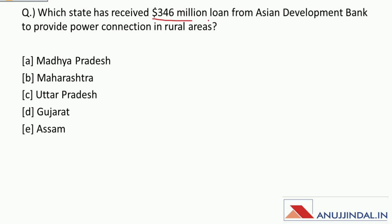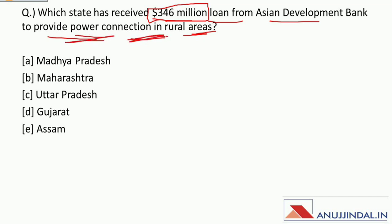Which state has received a $346 million loan from the Asian Development Bank to provide power connections in rural areas? Loans are very frequently asked in exams — you should know the amount, who gave it, who received it, and for what purpose. This loan of $346 million from the Asian Development Bank was given to Maharashtra to provide power connections in rural areas. The Chief Minister of Maharashtra is Uddhav Thackeray of Shiv Sena.